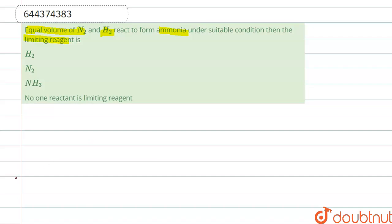First we know what is limiting reagent. Limiting reagent is the substance in a chemical reaction that gets completely consumed when the reaction is completed. So here, when N2 reacts with H2, it forms ammonia.